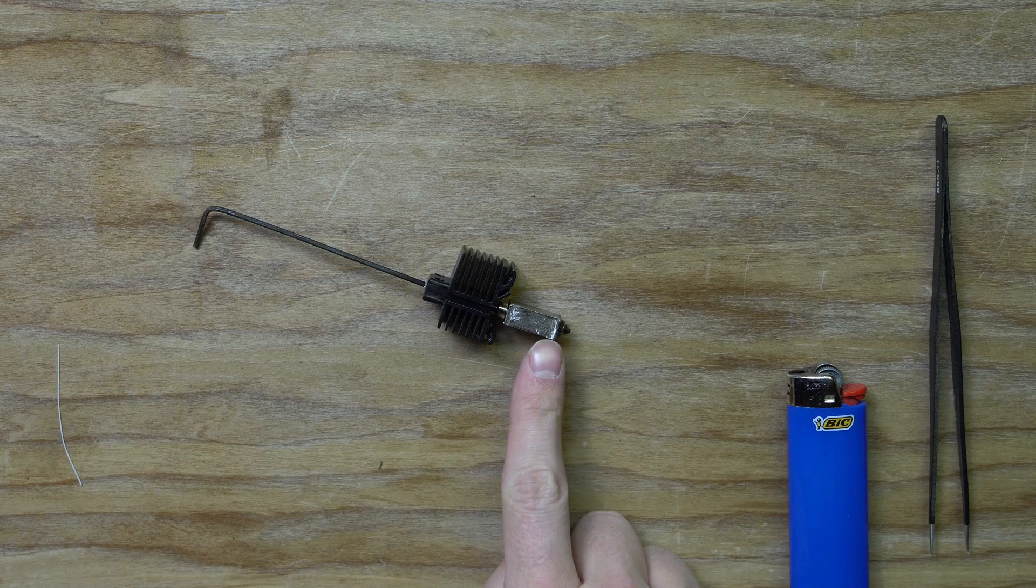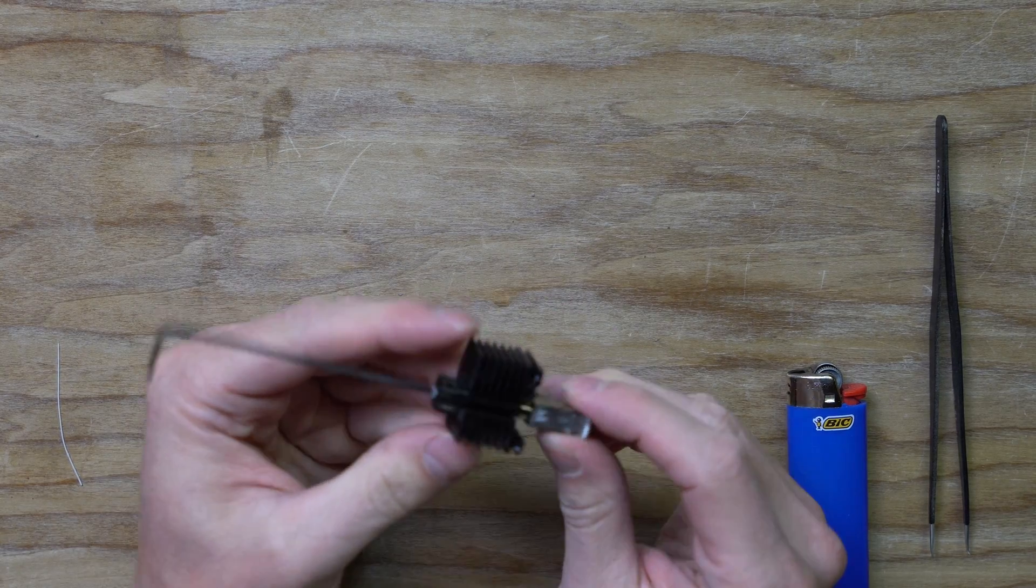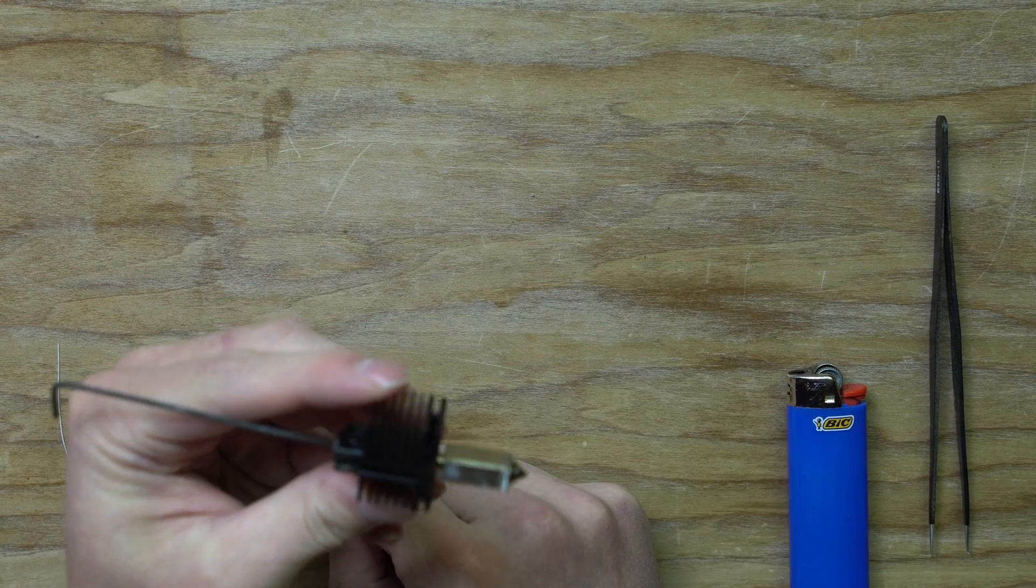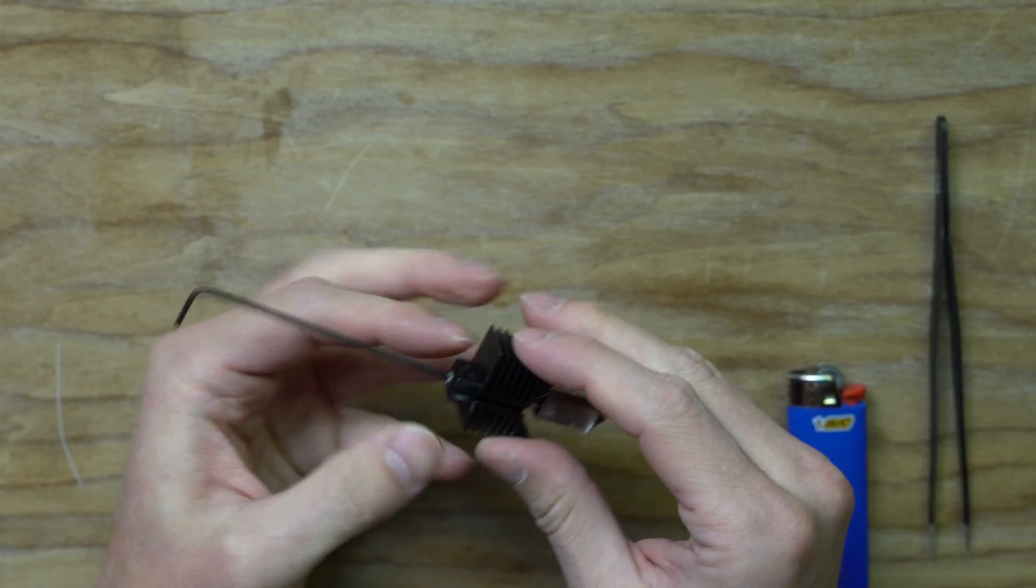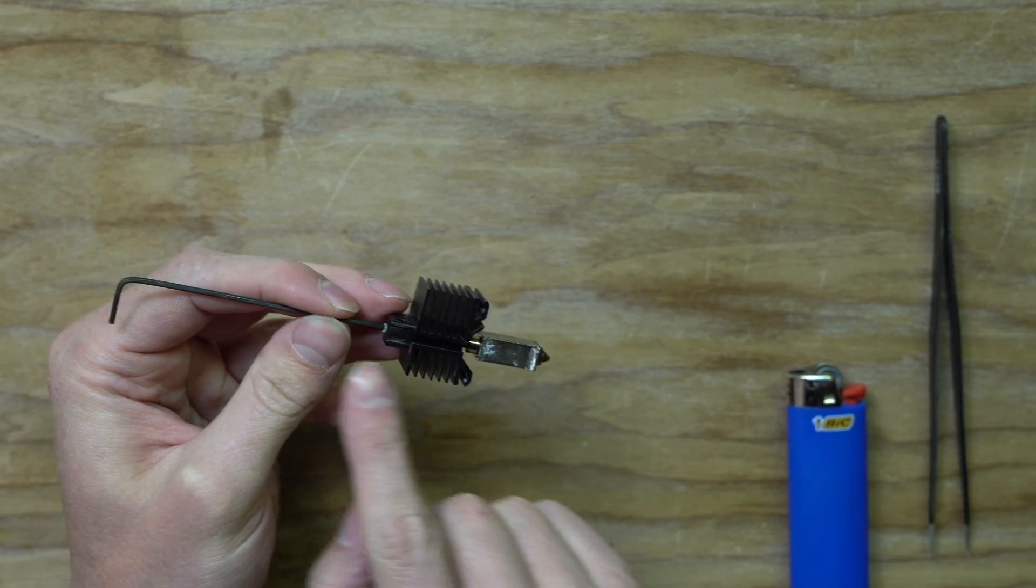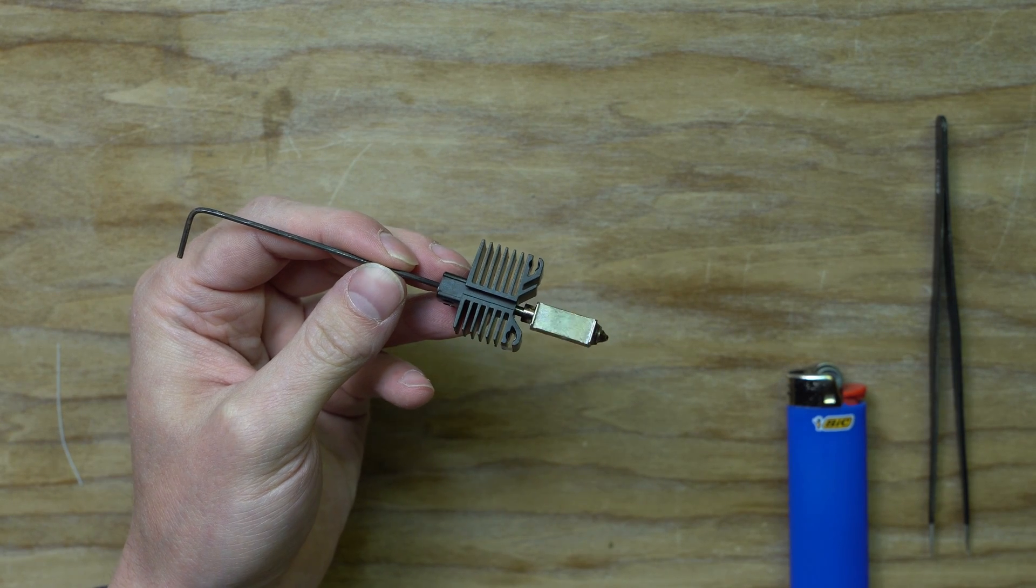Next thing we're going to do is we're going to heat this end. We've taken the sock off already and now we can heat the nozzle to try and pull this out at the same time and pull all that filament out of the hot end.